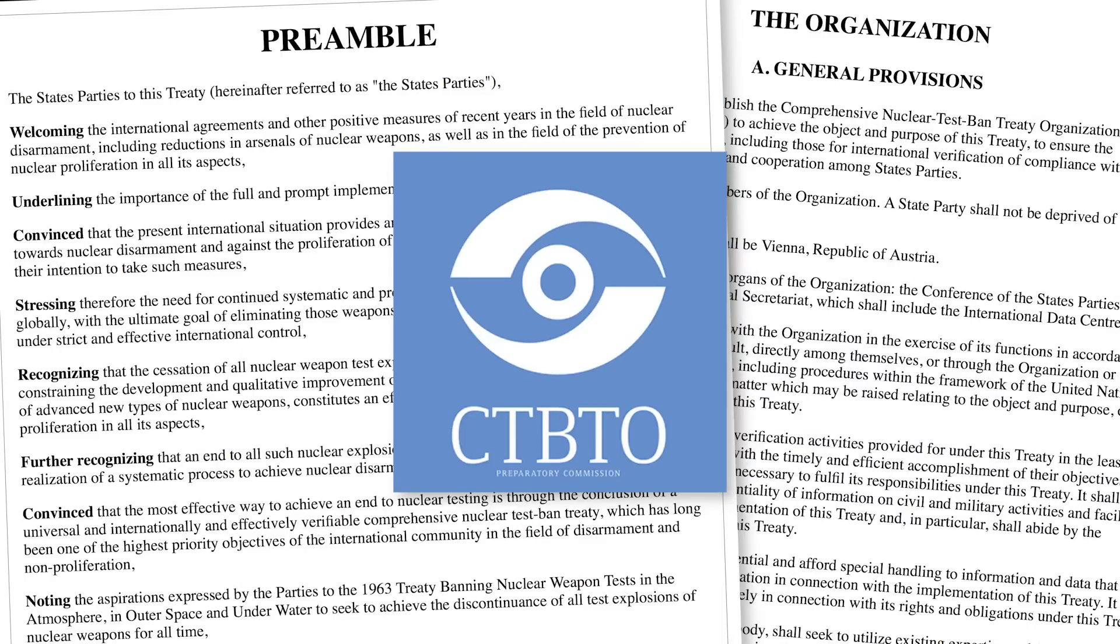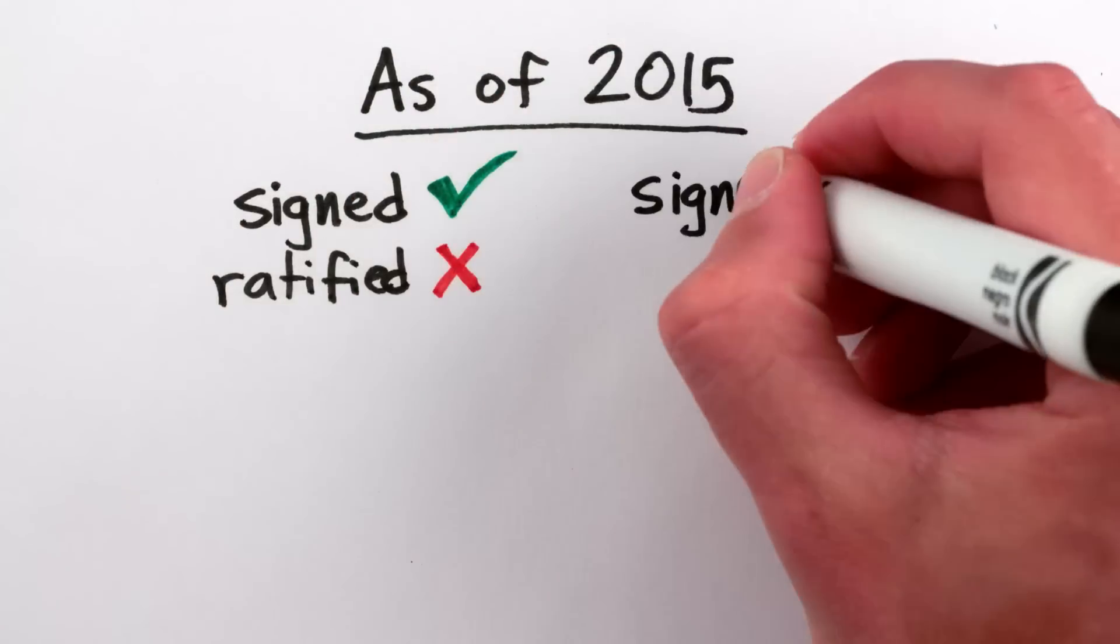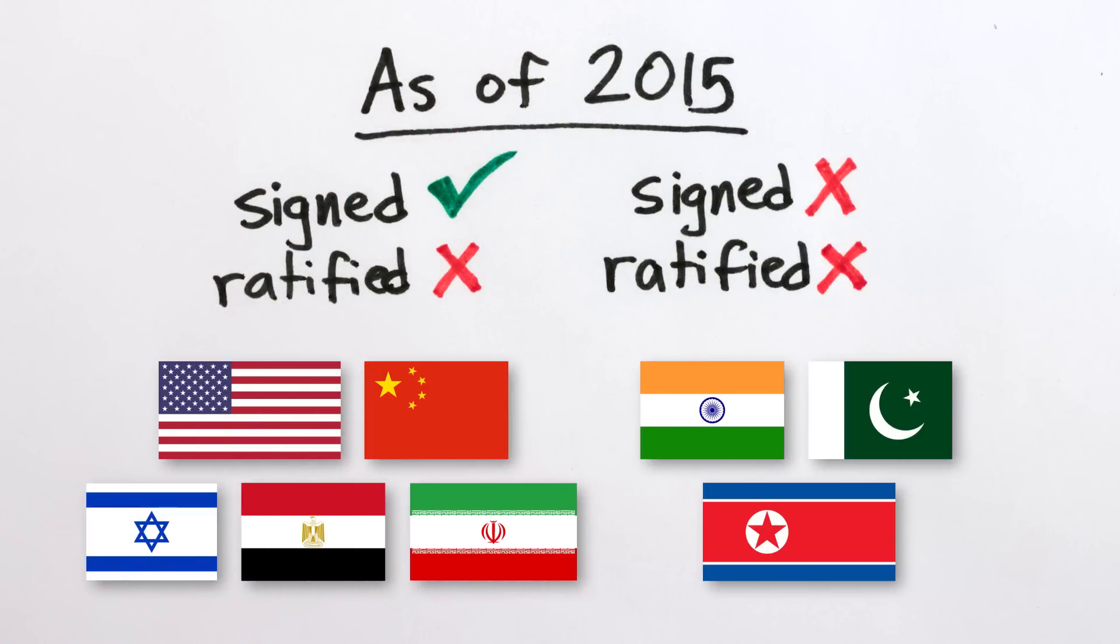The Comprehensive Nuclear Test Ban Treaty prohibits all nuclear explosions anywhere on Earth for any purpose, period, though as of 2015 it still remains to be signed and or locally ratified in a few important places.